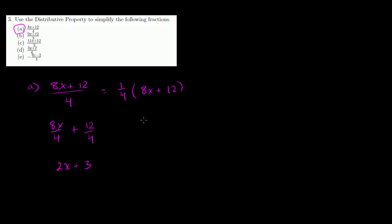That's one way to do it. Or you could do it this way. 1 fourth times 8x is 2x plus 1 fourth times 12 is 3. Either way, we got the same answer.